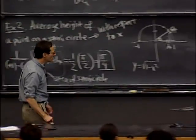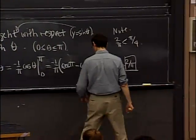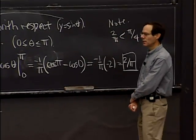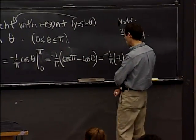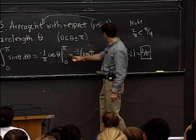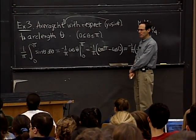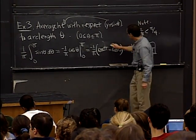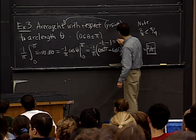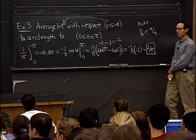A student asks about cosine of pi. Cosine of pi is negative 1, and cosine of 0 is 1. So we get negative 1 minus 1, which is negative 2. Then negative 1 over pi times negative 2 gives 2 over pi. They don't cancel — it's minus 1 minus 1 equals minus 2.